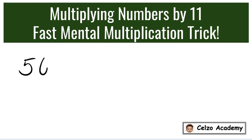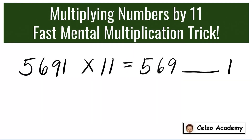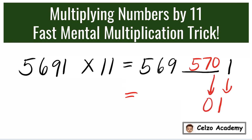Our last example: 5,691 times 11. Write down 569, space, and then 1. Add 569 plus 1, which is 570. For the final answer, copy the 1, copy the 0, then add 569 with 57, which is 626. So the answer is 62,601.